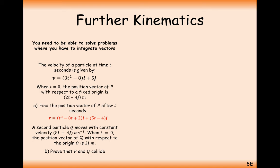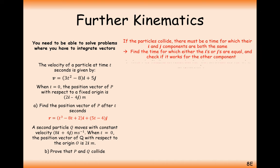Part B: a second particle Q has constant velocity 8i plus 4j. When t equals 0, its position vector with respect to the origin is 2i. We need to prove that P and Q will collide, so we must work out the position vector of particle Q. We have Q's velocity, so we integrate to find its position.